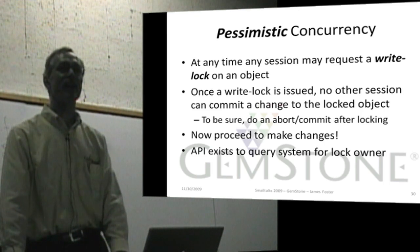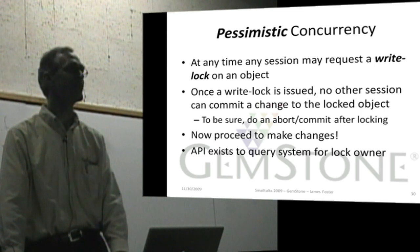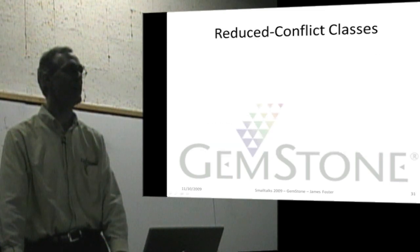There are APIs in the system to find out who owns a lock. So if you want to lock something and fail, you can find out who has it.